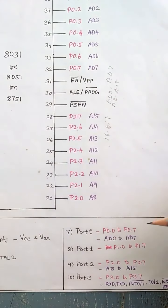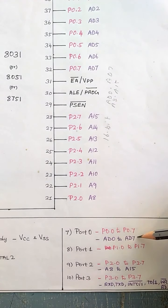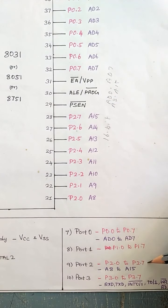Port 0 either acts as IO pins or as lower byte address lines. Similarly, Port 2 acts as either input or output lines or as higher byte address lines.